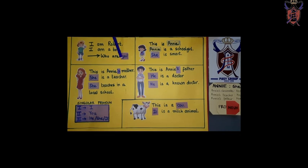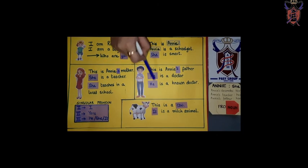Second person korn hai? You. I. You. Uske baat korn aate hai? Uske baat aate hai? She, he, and it.